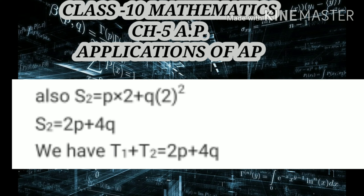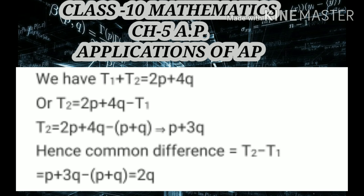We have already found T1, the first term S_1 = P + Q. If we want to find the second term T2, we subtract S_2 minus S_1. So T2 = (2P + 4Q) minus (P + Q). When we subtract, the second term T2 becomes P + 3Q.